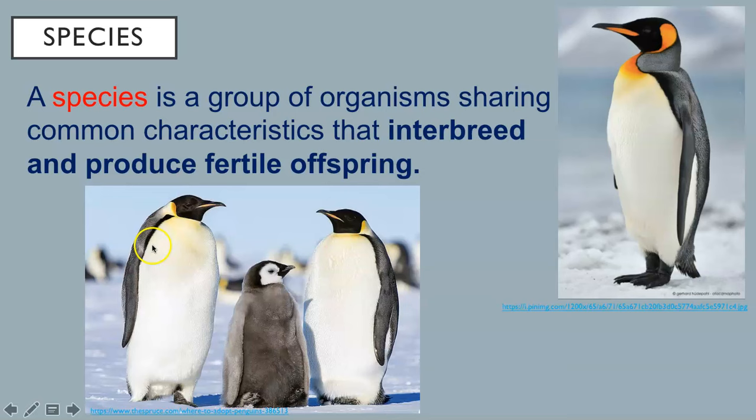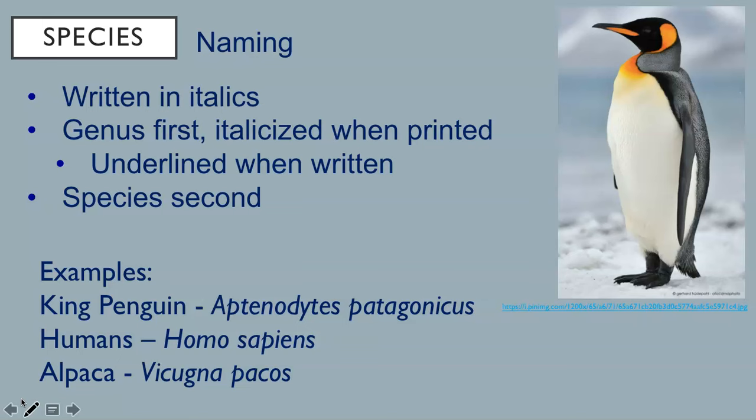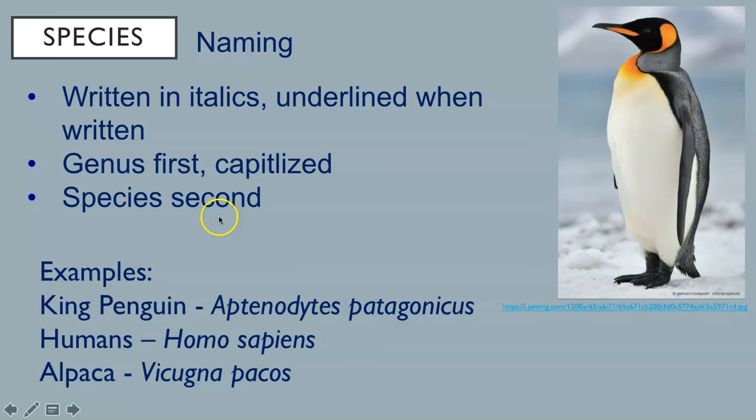You need to know how to properly write the names of species. They are always written in italics when you type them, but you underline them when you write them by hand. The genus always comes first and is capitalized, and the species name is second.